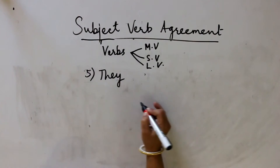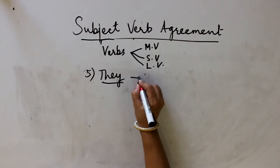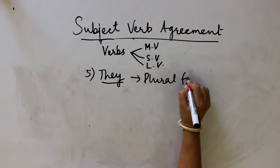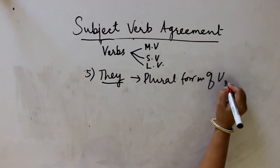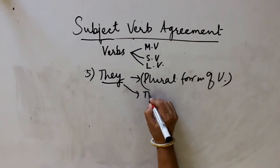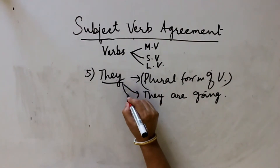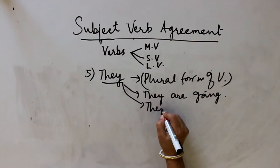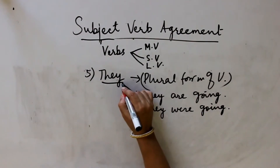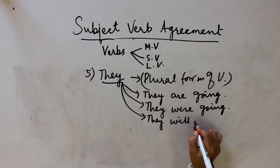With 'they,' which is the plural form of the third person, we have to use the plural form of the verb. So in present tense it will be 'they are going,' in past tense 'they were going,' and in future tense 'they will or shall go.'